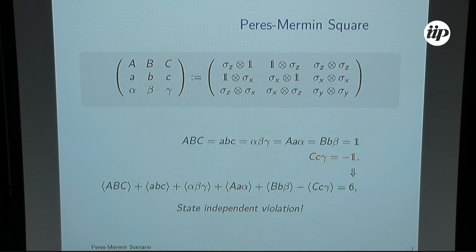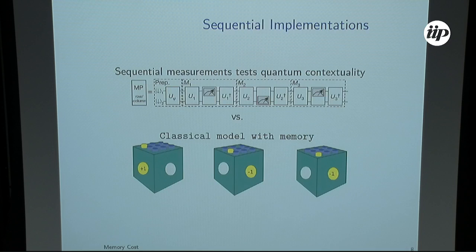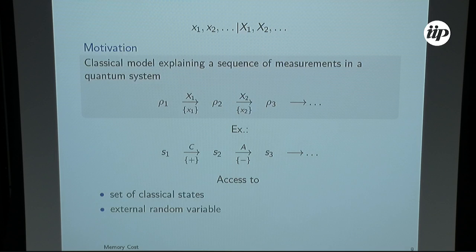We'll look at this scenario and the implementation of this scenario to see how we can simulate this with classical strategies. Usually they implement this type of scenarios in a sequential way. They prepare a quantum system, make sequential measurements on it. This allows some kind of state changes during the process, and you can interpret that as some kind of memory when you allow this access to different states.